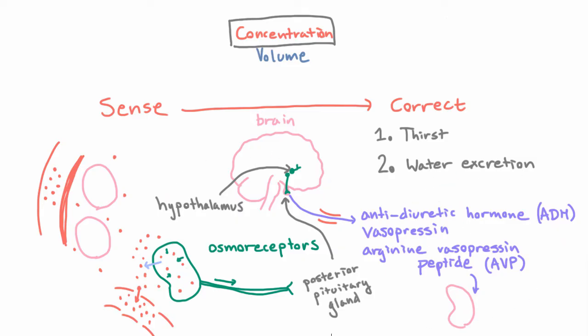So these are all the details that you need to know. The overall picture here is the brain is sensing changes in concentration and then it's going to correct them by changing your thirst and changing your water excretion.